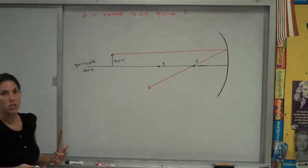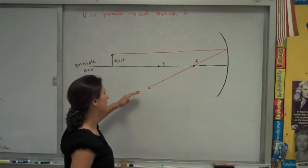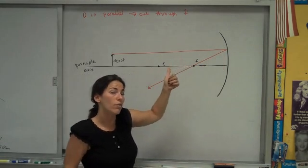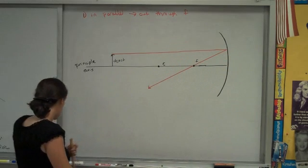Now, if light can go one way, we could imagine it could go the other way. So had I sent light in this way through f, we might expect that it bounces off and goes parallel. In fact, that's our second rule.